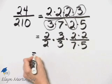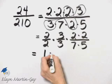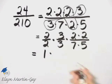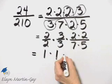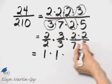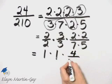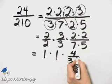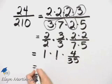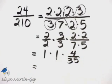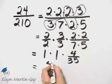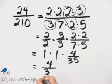So this is essentially 1 times, what's 3 over 3? That is 1 again, and then times, what do we have here? 2 times 2 is 4 over 7 times 5, which is 35. And then what happens? Well, 1 times 1 times 4 over 35 is simply 4 over 35.